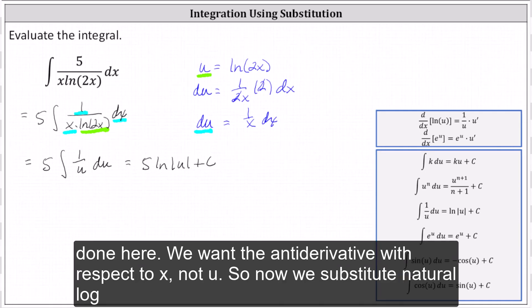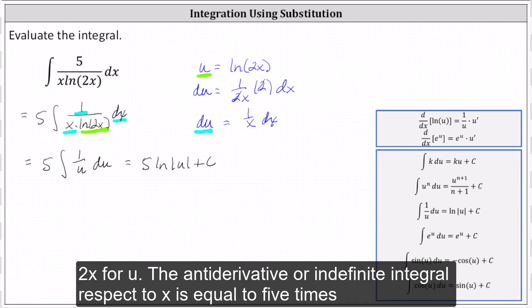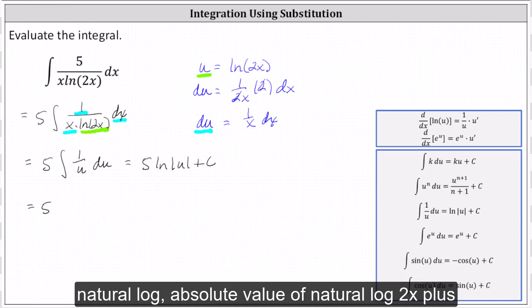but we're not done here. We want the antiderivative with respect to x, not u, so now we substitute natural log 2x for u. The antiderivative or indefinite integral with respect to x is equal to five times natural log absolute value of natural log 2x plus c.